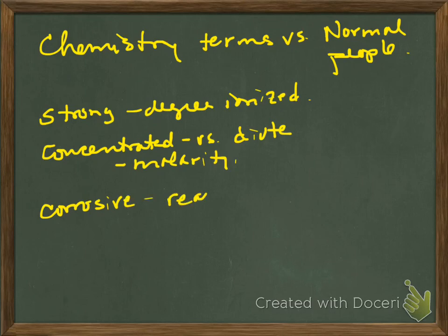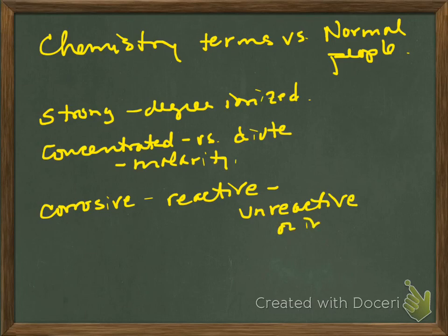And then terms like corrosive really relates to how reactive the acid or the base is. The opposite of reactive would be unreactive or inert. Typically, the definition for strong and normal people is the one that differs quite a lot from what we would do.